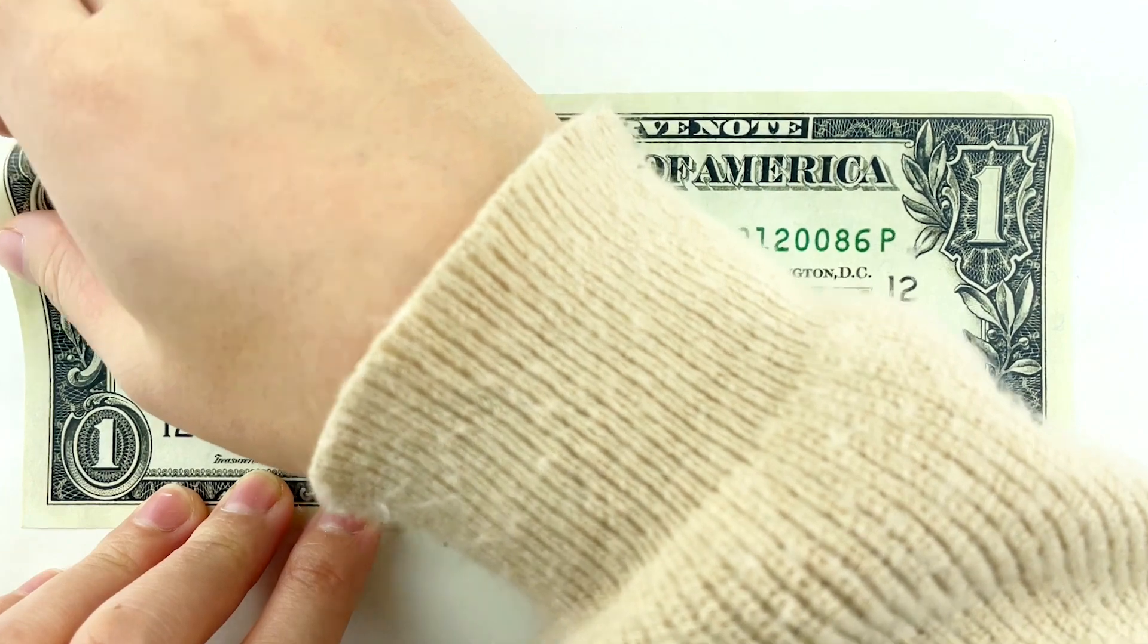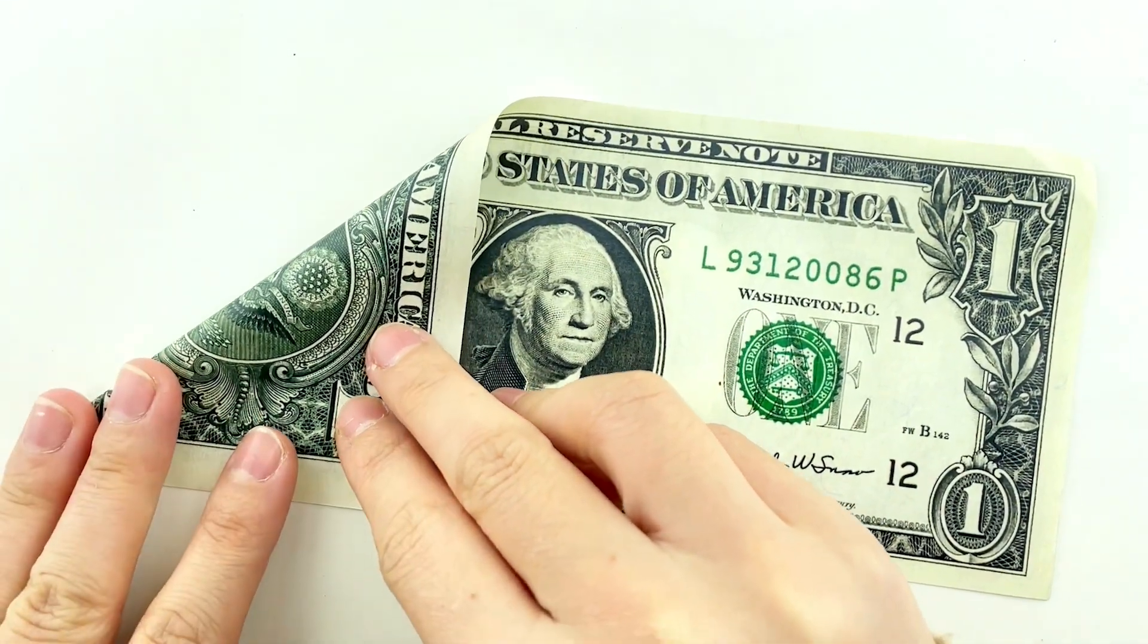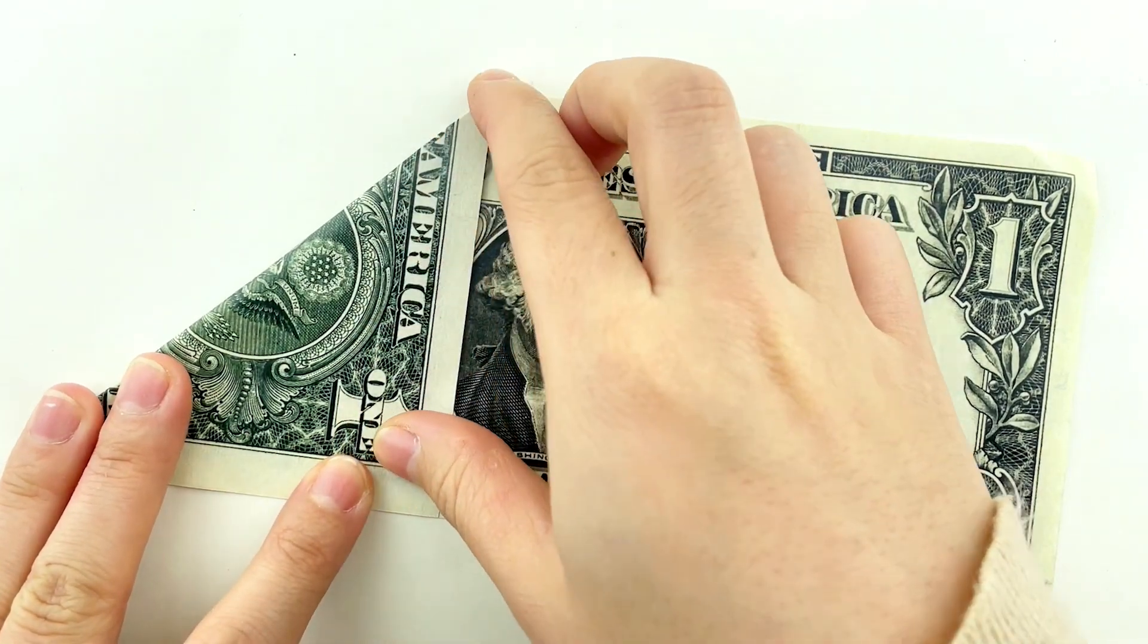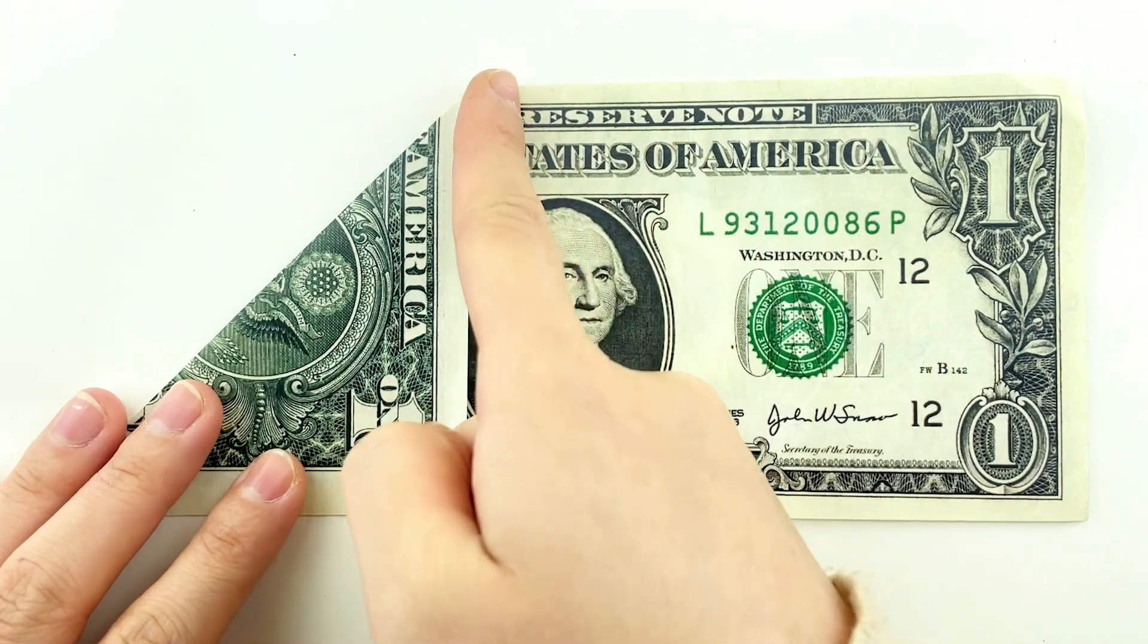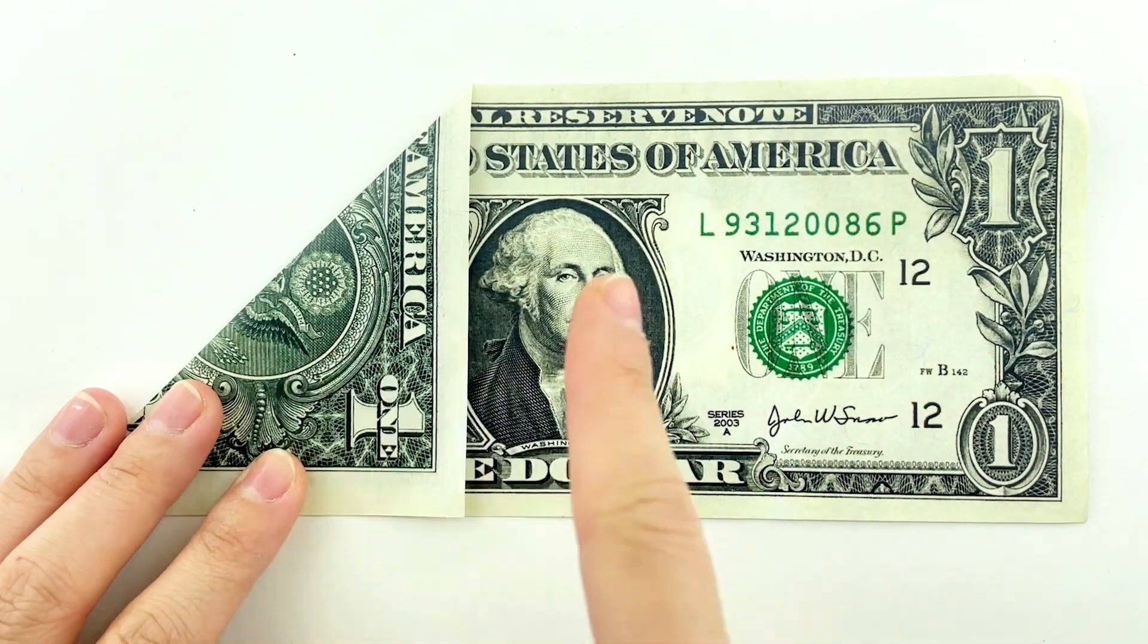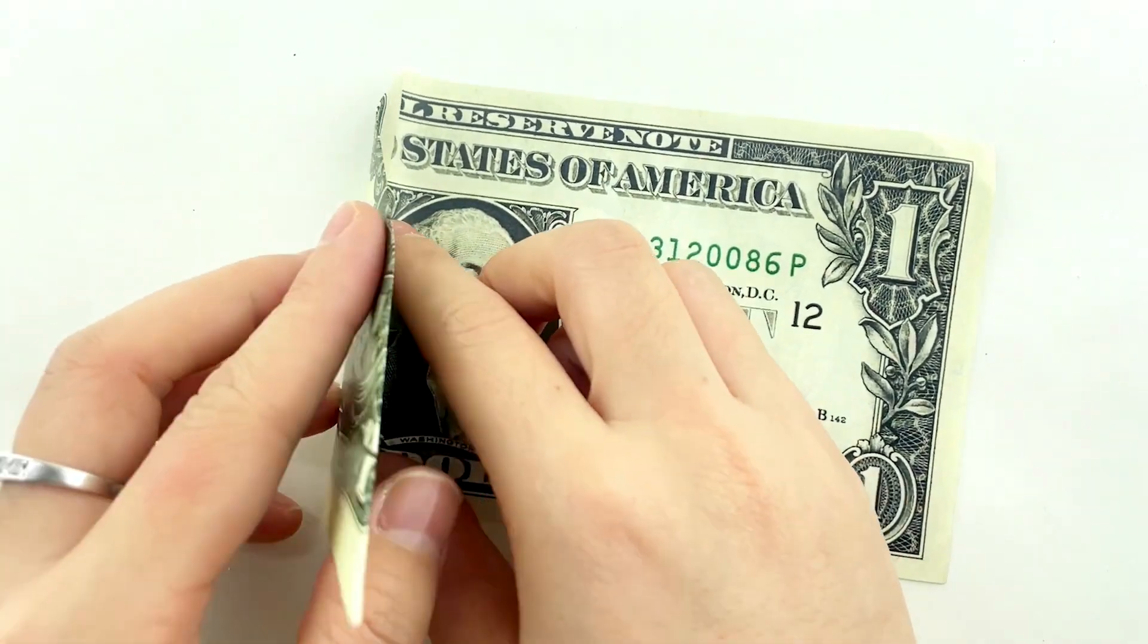To start, valley fold the left edge of your dollar bill to meet the bottom edge. Valley fold the left tip to the right side, giving your dog a charming little snout.